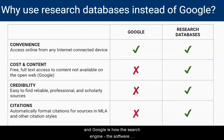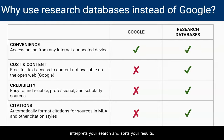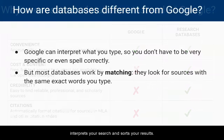Another key difference between research databases and Google is how the search engine — the software that takes what you type in and provides a list of results — interprets your search and sorts your results.